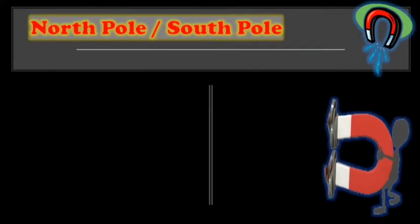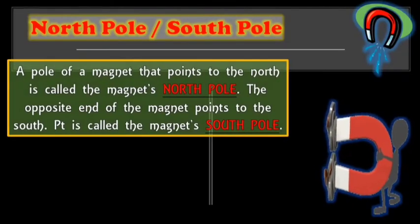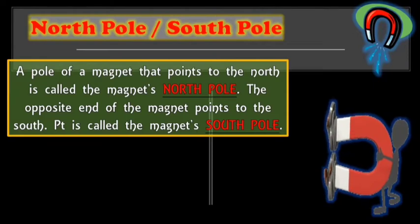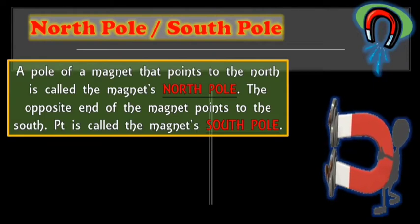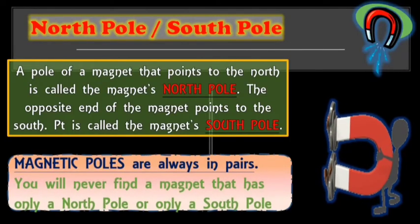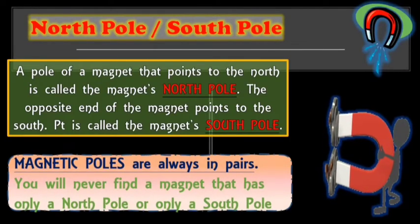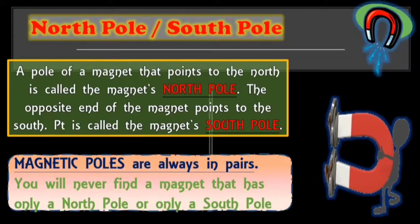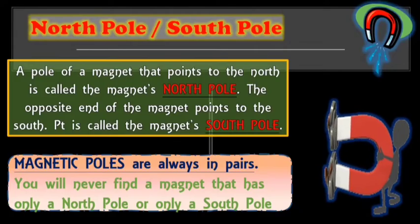In a magnet, we have what you call north pole or the south pole. A pole of the magnet that points to the north is called the magnet's north pole. And the opposite end of the magnet points to the south is called the magnet's south pole. Magnetic poles are always in pairs. You will never find a magnet that has only North Pole or only a South Pole. This means they have both North and South, they always come together in pairs.